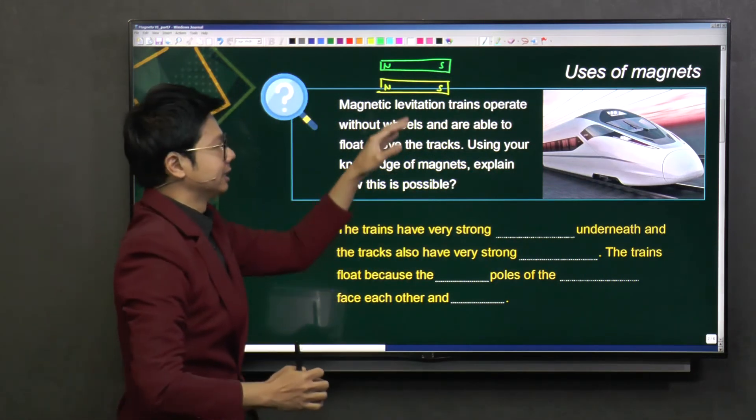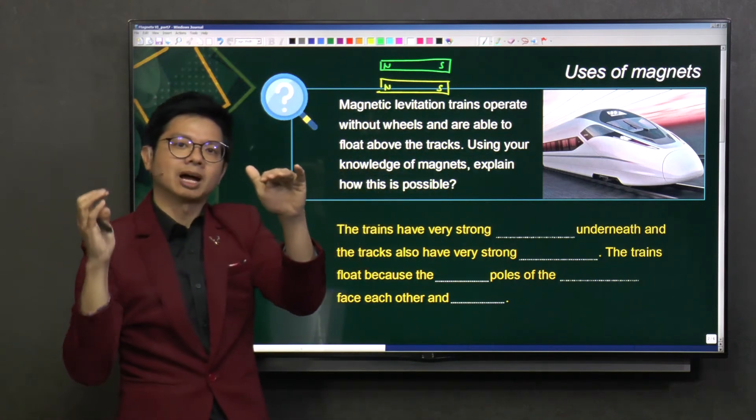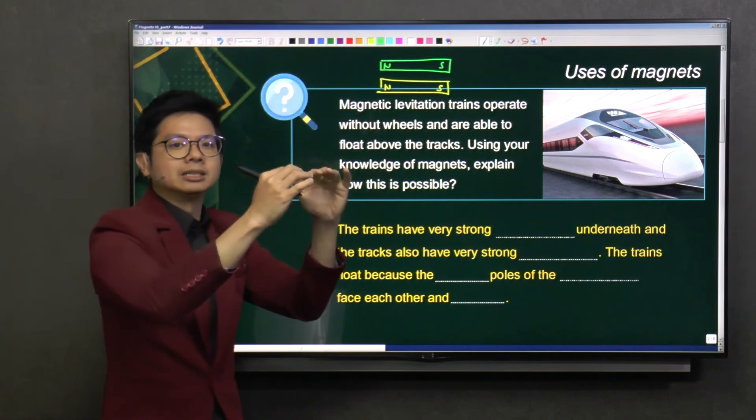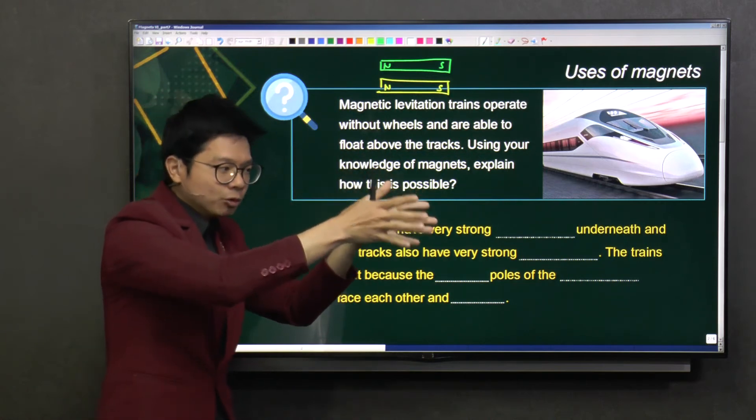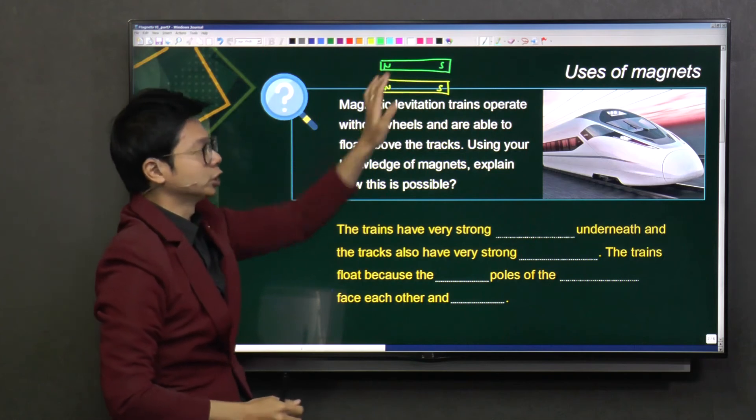But guys, this is basically the main theory. But there are other things that will come in place to make sure that the Maglev train does not move out of the track as well. But the main theory is this, the repulsion of magnets.